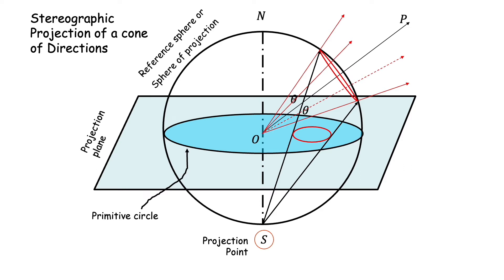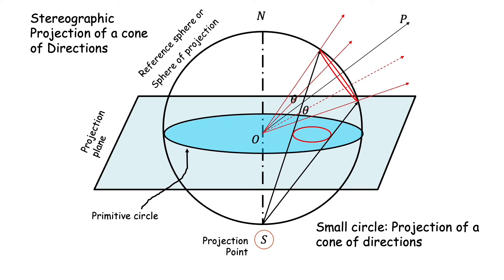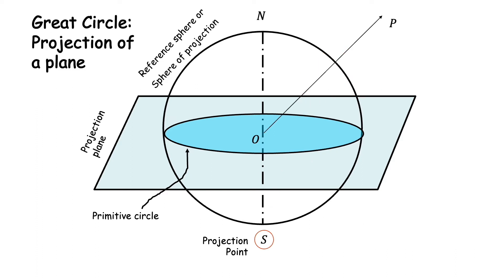To get the stereographic projection we project this circle using the projection point S onto the projection plane. Because of the elegant property of stereographic projection that every circle on the sphere projects as a circle on the projection plane, we get the projection as a circle. This circle represents the cone of angle theta about OP and is called a small circle. A small circle is nothing but the projection of a cone of directions.